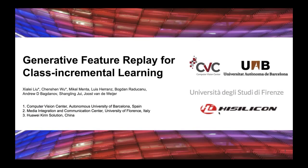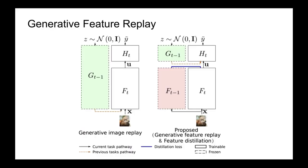Hello everyone, I'm going to present our work: Generative Feature Replay for Class Incremental Learning. Generative Image Replay is a popular strategy to replace synthetic images for class incremental learning, as shown on the left side. However, it yields unsatisfactory results for large datasets. In this work, instead of replaying images, we propose to replay features. To prevent forgetting in the feature extractor, we apply feature distillation.